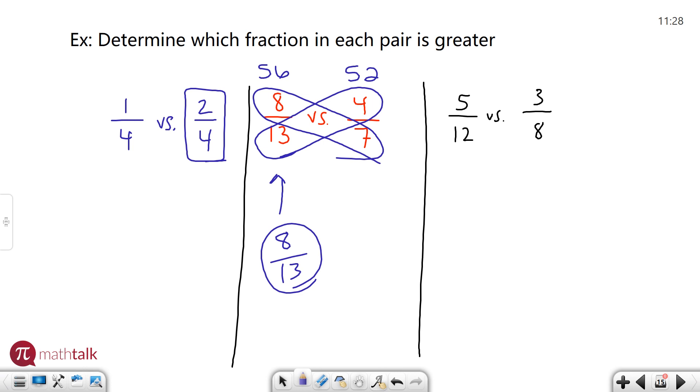Five over twelve versus three over eight. Again two pretty uncommon fractions. They have different denominators. I don't want to find a common denominator and equivalent fractions. I'm going to use my cross multiplying and figure out which one is larger. Again go up. Eight times five is 40. Twelve times three is 36. Forty is larger than 36 which means five over twelve is the larger fraction between these two. That's how you can use that to compare fractions.